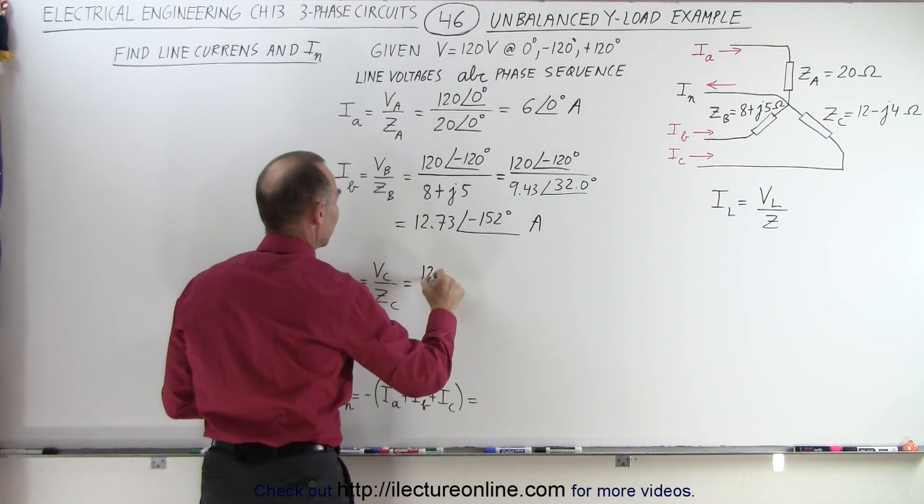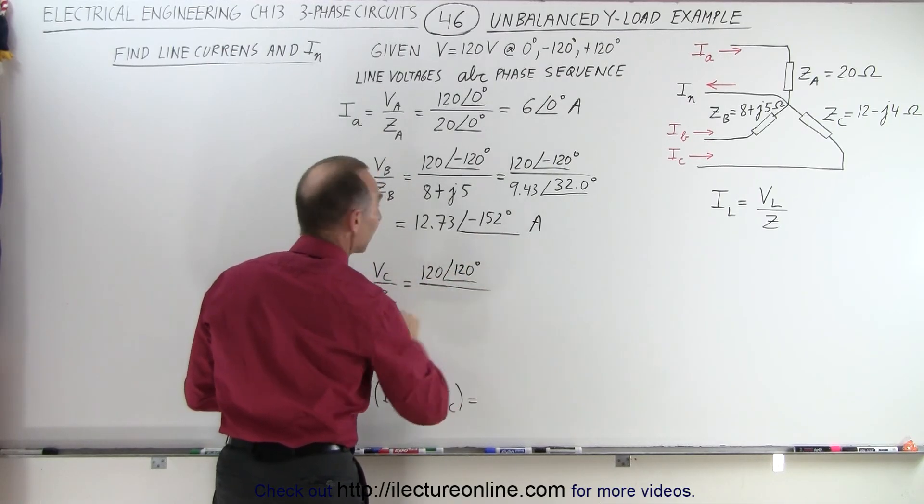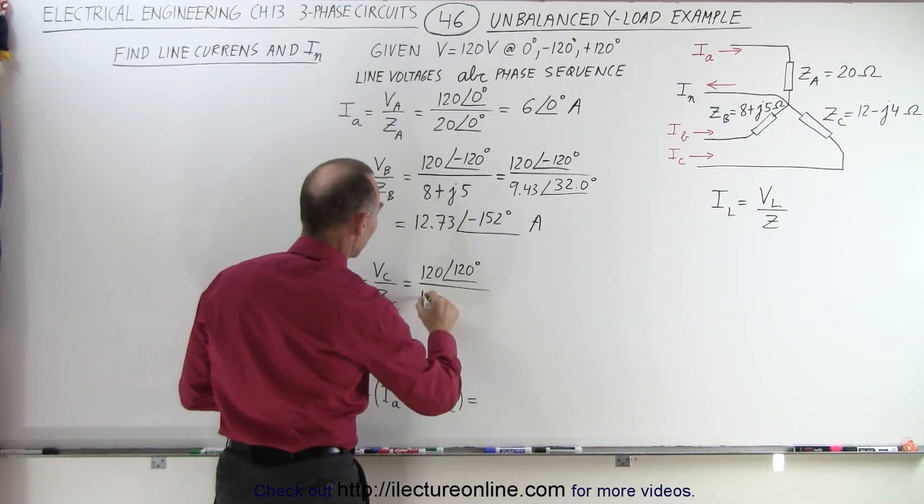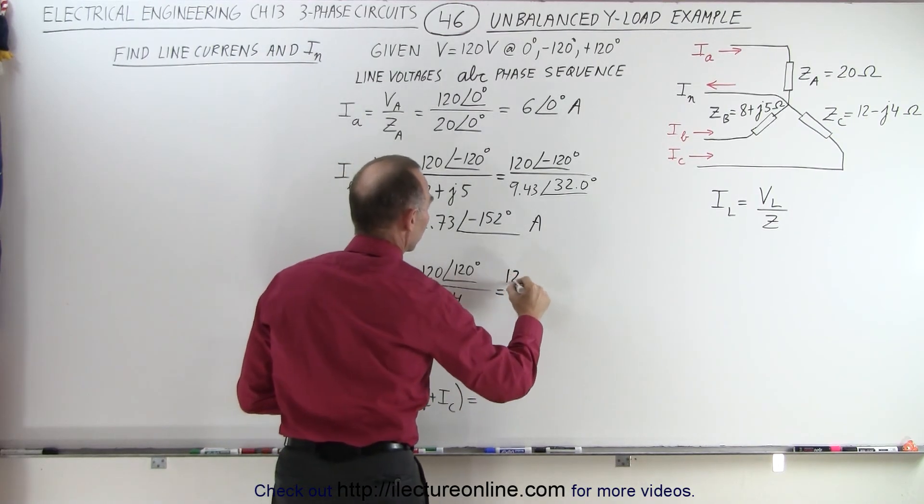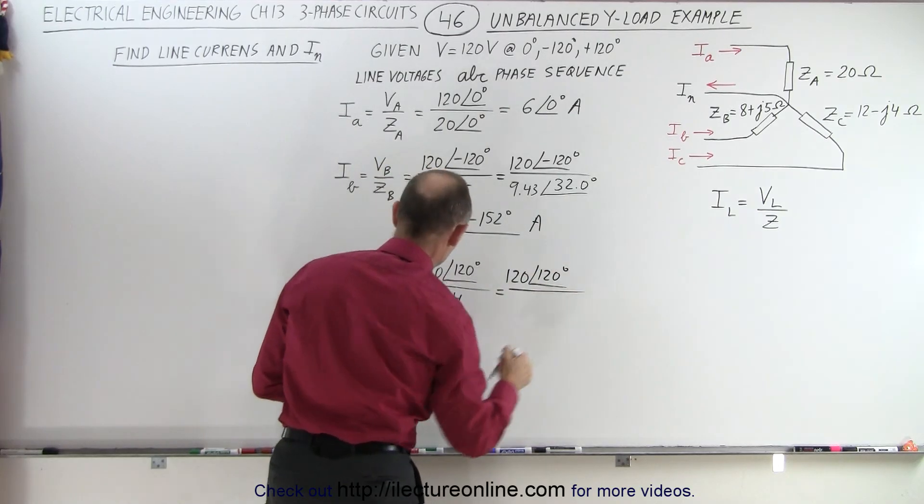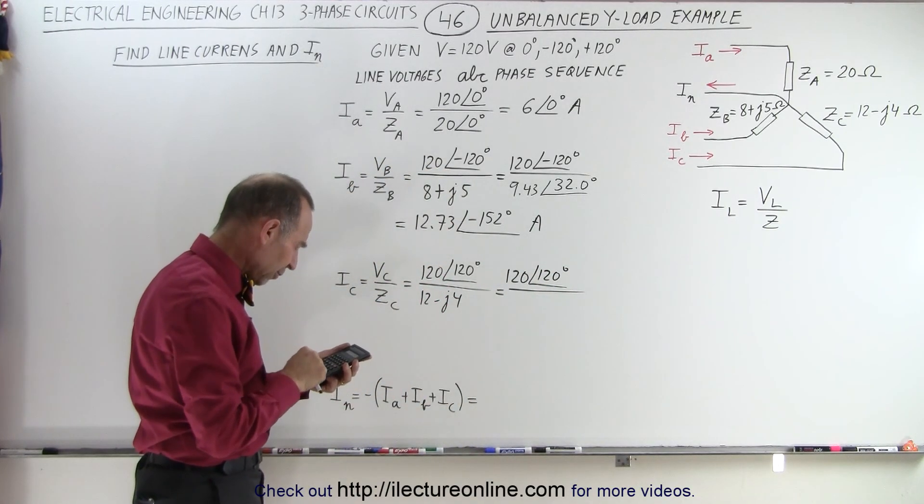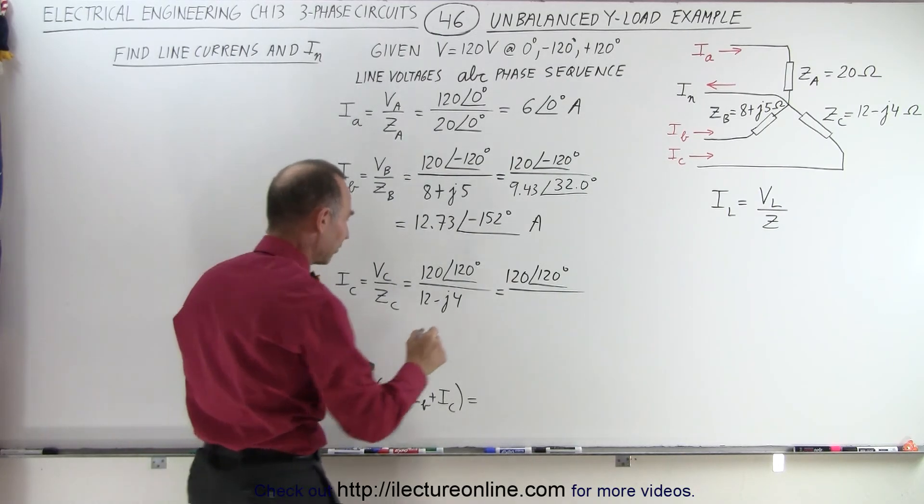That would be 120 volts with a phase angle of a positive 120 degrees, divided by Z sub C, which is 12 minus J4, which is equal to 120 with a phase angle of 120 degrees, divided by, that would be 144 plus 16, take the square root, which is 12.65.